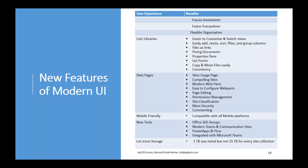These are some of the new features of modern UI. This is Microsoft's future investment — this is where Microsoft is heading. Make sure you don't do much investment on classic UI customization or branding. Modern UI is faster, has flexible organization with hub sites, is mobile friendly and compatible with all mobile platforms. New tools that integrate well include Office 365 Groups, modern team and communication sites, Power Apps, Flow, integration with Microsoft Teams, and now site collections can have up to 25 terabytes of storage.